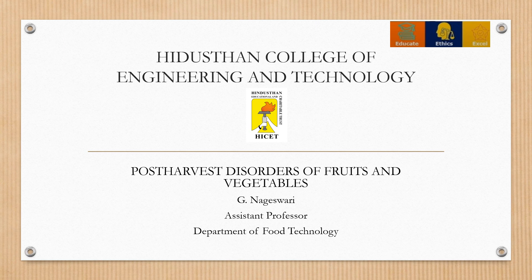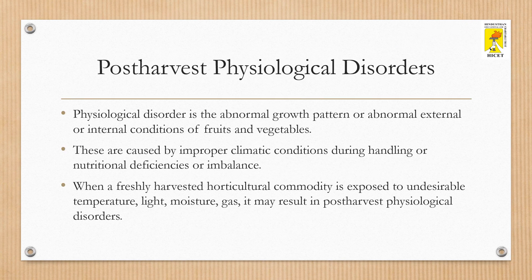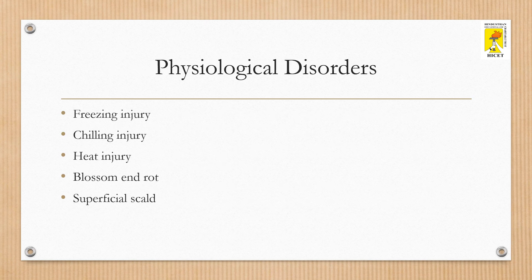In this video we are going to see the post-harvest disorders of fruits and vegetables. A physiological disorder is the abnormal growth pattern or abnormal external or internal conditions of fruits and vegetables caused by improper climatic conditions during handling, nutritional deficiencies or imbalance. When a freshly harvested horticultural commodity is exposed to undesirable temperature, light, moisture, gas, etc., it may result in poor quality physiological disorders.